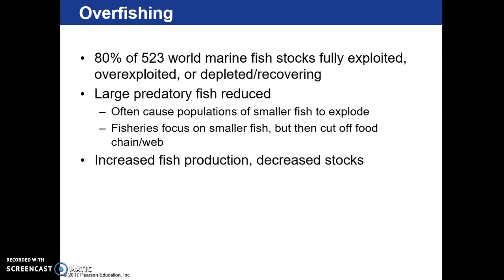About 80% of fisheries are fully exploited, over-exploited, depleted, or recovering. Part of that includes our large predatory fish, which also happen to be the ones that are really good to eat. As a result, populations of smaller fish are beginning to explode with huge increases in reproduction, and fisheries are refocusing on those smaller fish. But those smaller fish are the base of the food web — the lower food web levels for those larger predatory fish.